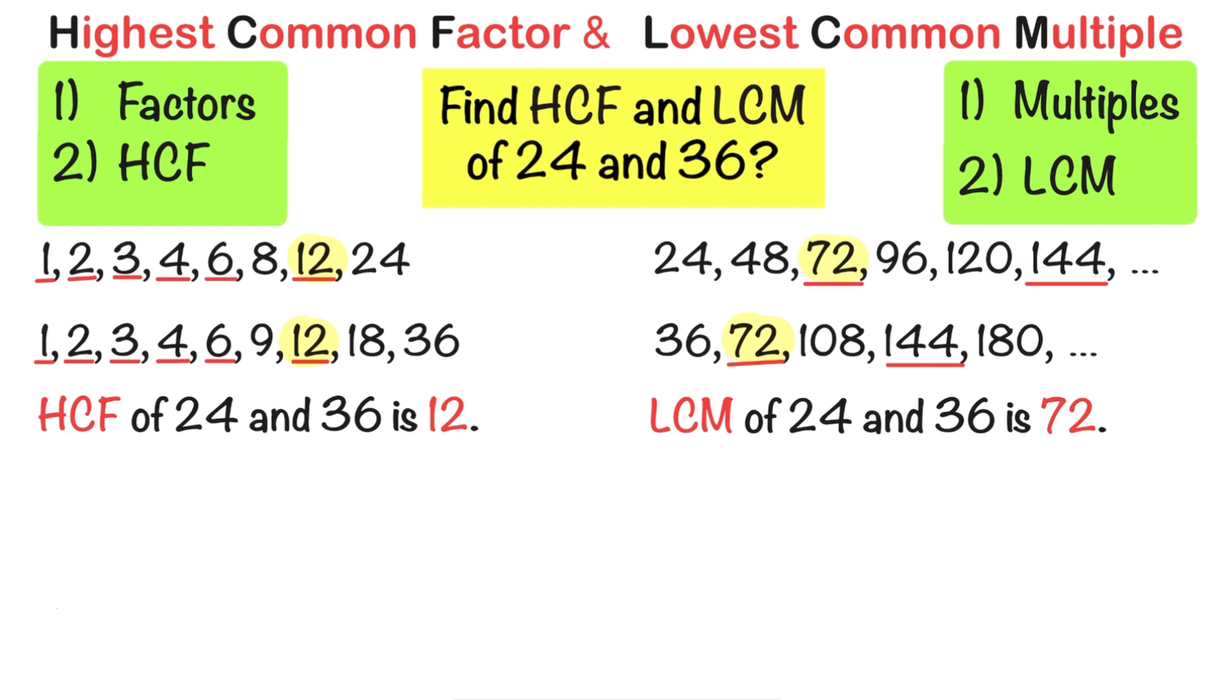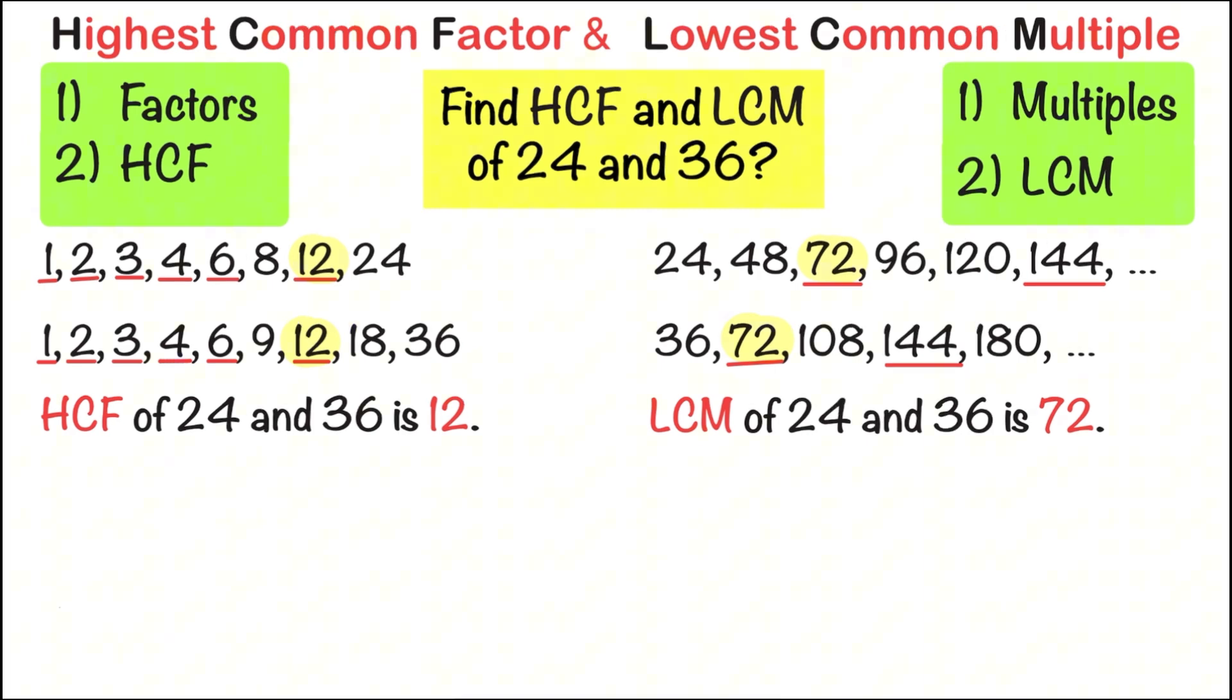Some students mix up highest common factors and lowest common multiples. So here is a tip. The highest common factor is always less than or equal to your numbers. The lowest common multiple is always greater than or equal to the given numbers. That's why it's a good idea to practice them side by side.